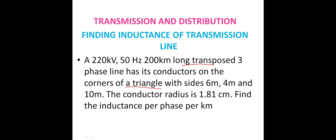Sometimes they will give an equilateral triangle, which means the distances between the conductors are all the same. But here it is not given as equilateral — simply corners of a triangle with sides 6 meter, 4 meter, and 10 meter. So the distances between the three conductors are not the same. The conductor radius is 1.81 centimeter.